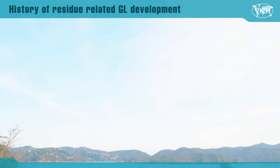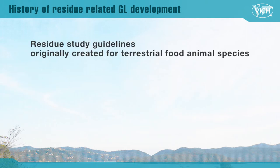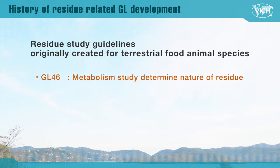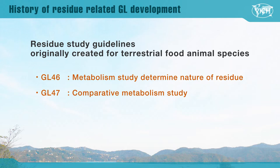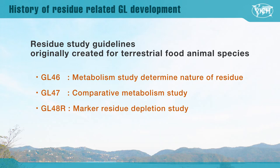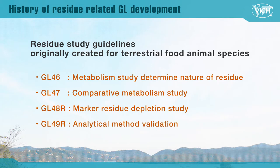Residue study guidelines were originally created for terrestrial food animal species, mainly for cattle, pig, and poultry. Those guidelines include GL46 for metabolism study to determine the quantity and identify the nature of residues; GL47 for comparative metabolism studies in laboratory animals; GL48R for marker residue depletion studies to establish product withdrawal periods; and GL49R for guidance for the validation of analytical methods used in residue depletion studies.